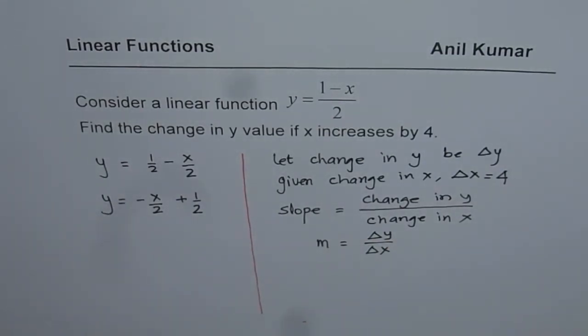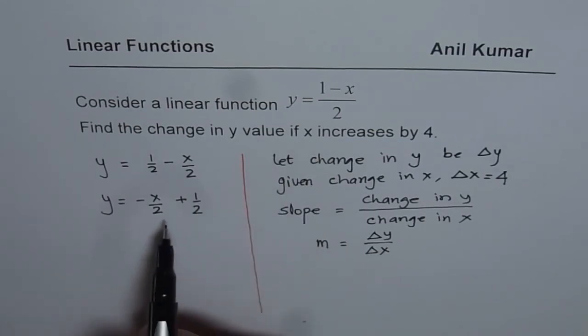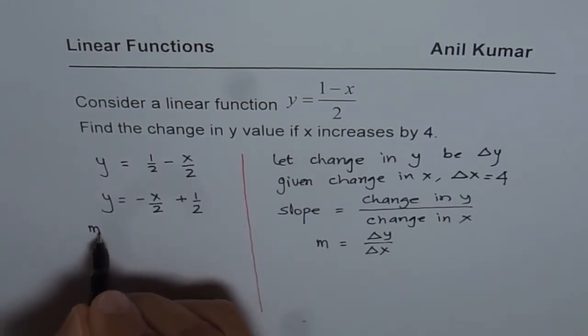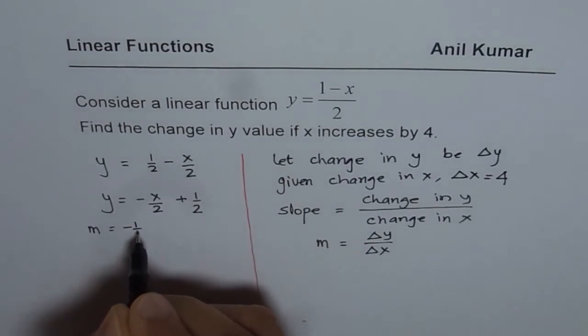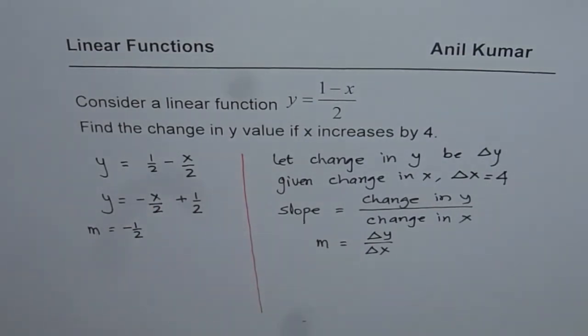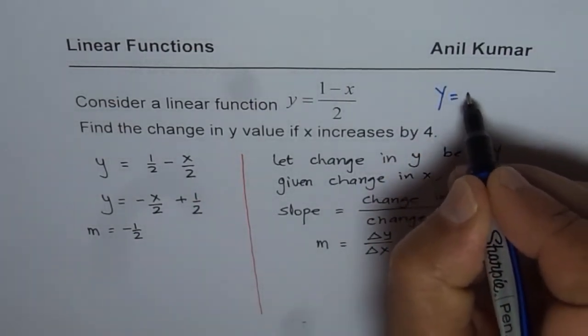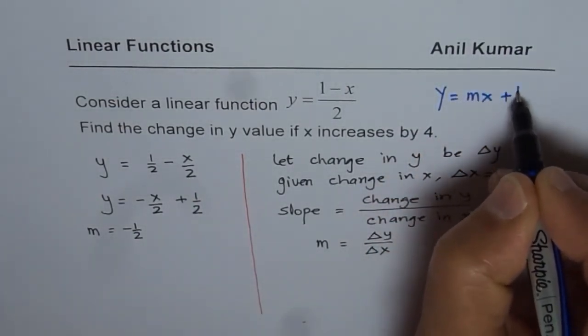Once we have rewritten the equation, it is very clear that we know the slope m is equals to minus half. It is coefficient of x, correct? We are comparing it with the equation of line, which is y equals mx plus b.